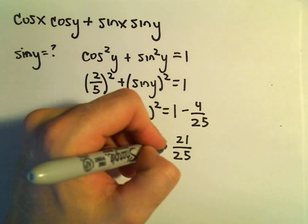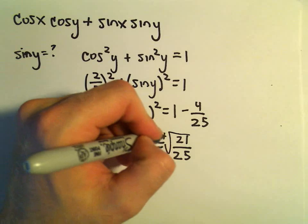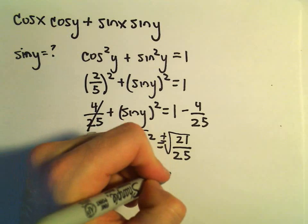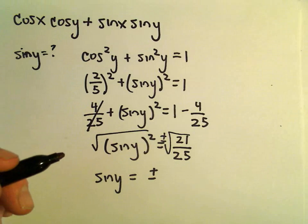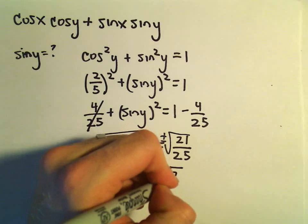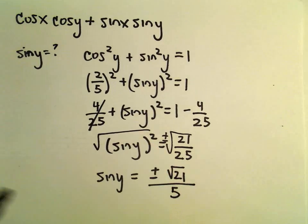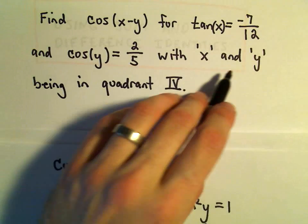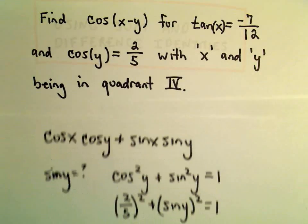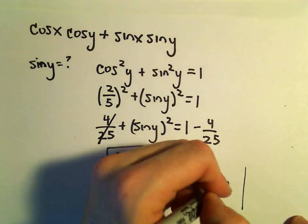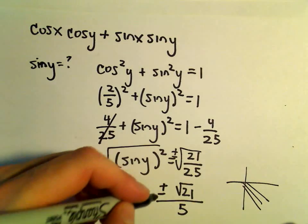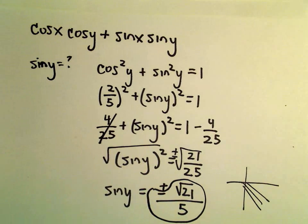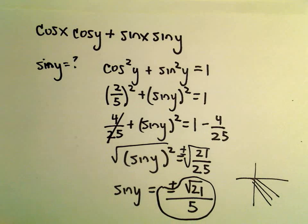We can take the square root of both sides. We've got to stick a positive or a negative on one side or the other. So I can break up the square root of 21 over 25 as square root of 21 over 5. In this case, we were told that our angle y was in quadrant 4. In quadrant 4, sine is negative. So we'll have to use the negative square root of 21 over 5 for the value for sine y.